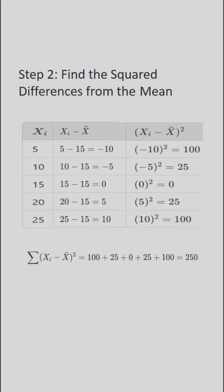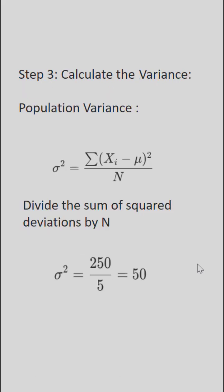Next, find the squared differences from the mean. Take each value — for example, 5 minus the mean 15 equals negative 10. Square that value to get 100. Calculate this for each value and take the sum, which is 250. This is called the sum of squared differences from the mean.